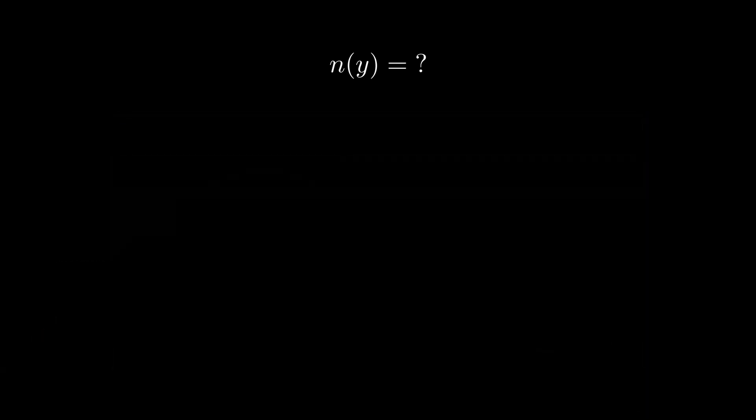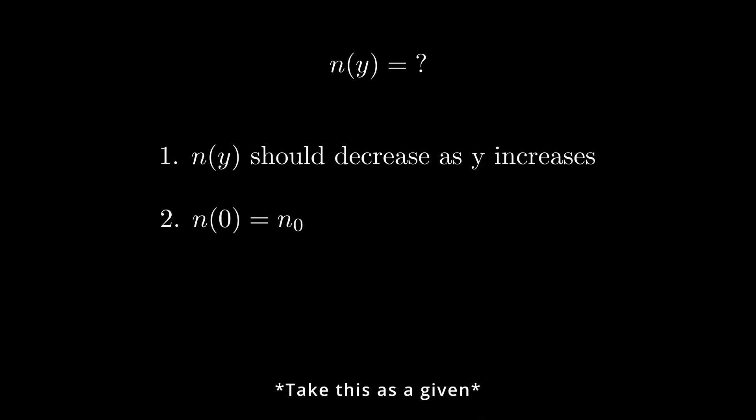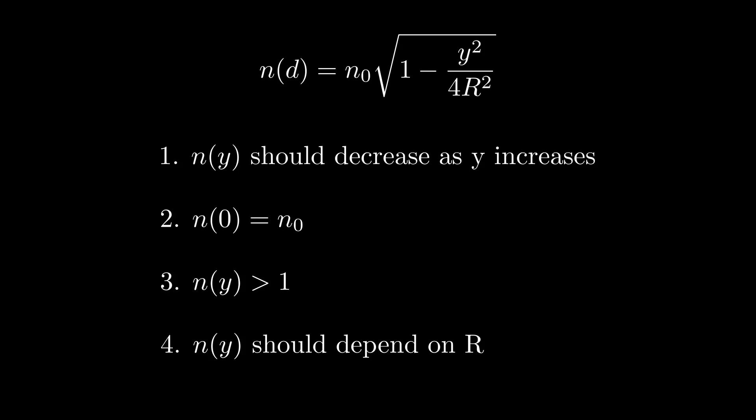First off, n should clearly be a decreasing function, and secondly, by definition, we should have n of 0 equal n0. Next, based on the definition of the index of refraction, n of y should always be strictly greater than 1 for any value of y. And finally, the function should incorporate the value of r into it somehow. In practice, a commonly used function is the square root equation up here, and I encourage you to take a moment to convince yourself that this function satisfies all the conditions below.